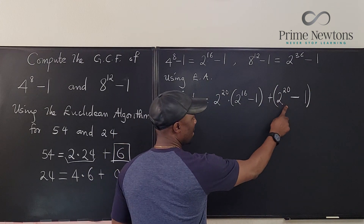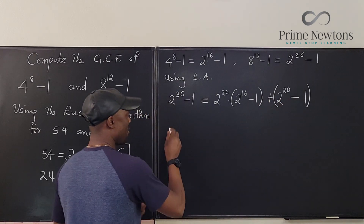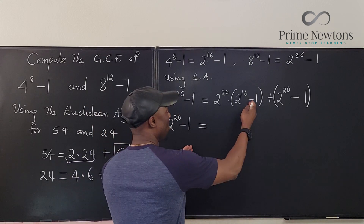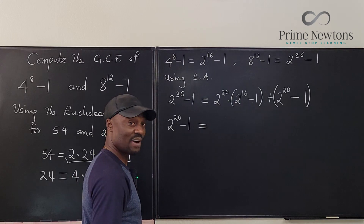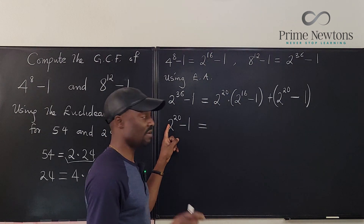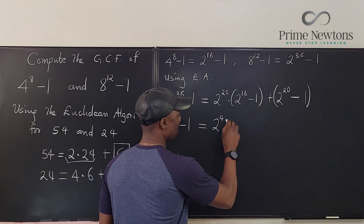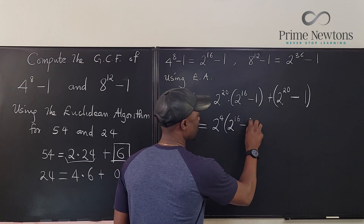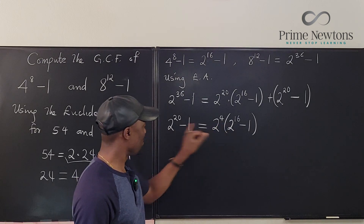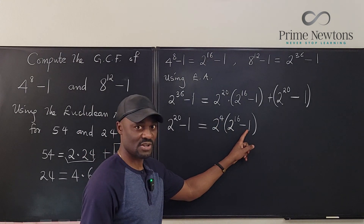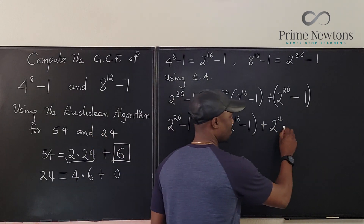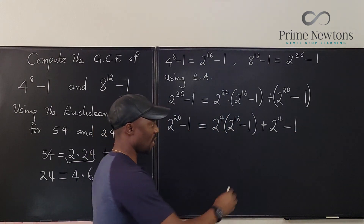Now 2 to the 20th minus 1 is bigger than 2 to the 16th minus 1, so I write 2 to the 20th minus 1 in terms of 2 to the 16th minus 1. What do I multiply 2 to the 16th by to get 2 to the 20th? That's 2 to the 4th. So: 2 to the 4th times (2 to the 16th minus 1) gives 2 to the 20th minus 2 to the 4th. I add back 2 to the 4th and subtract 1, so the new remainder is 2 to the 4th minus 1.